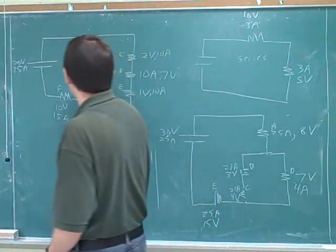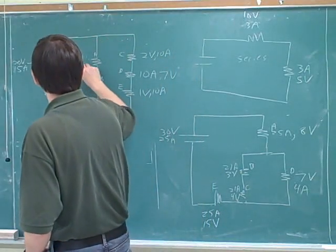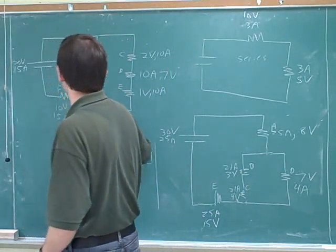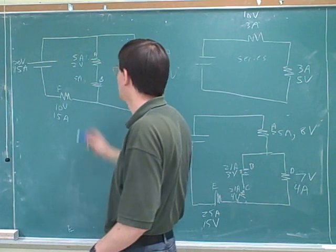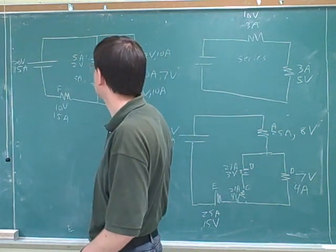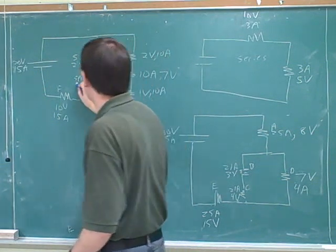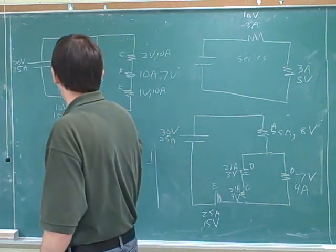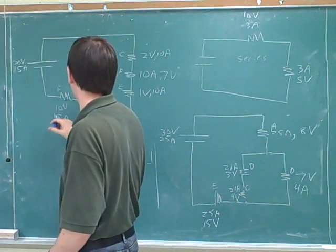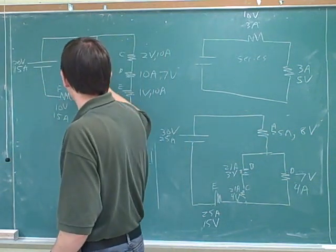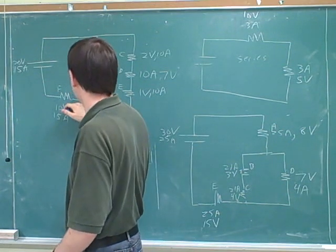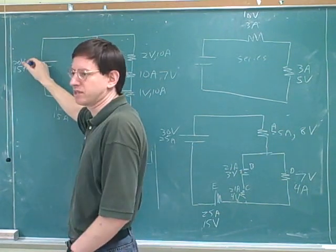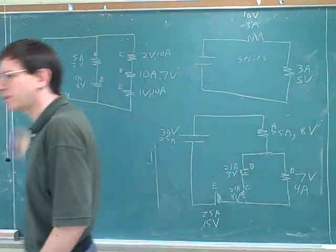Good, that's good progress. So if this is 2 volts, what would this be? That would have to be 8 volts. So now we have another loop where 2 plus 8 plus 10 — the voltage drops — equals the voltage source.